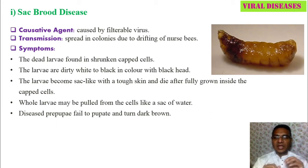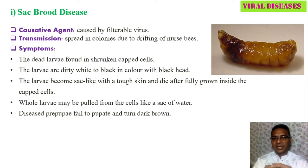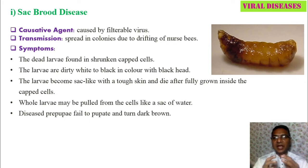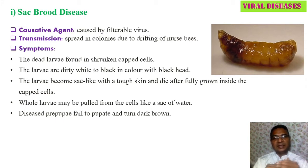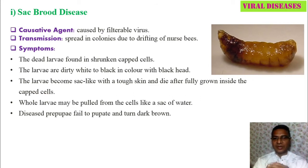Nurse bees also perform monitoring and surveying of the comb, moving from one place to another, one cell to another — that is the drifting of nurse bees. If a nurse bee is infected by the virus, it easily transfers the virus from one cell to another where developmental stages are present. The virus especially attacks full-grown larvae.